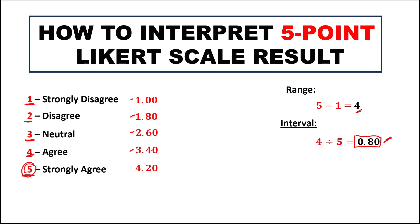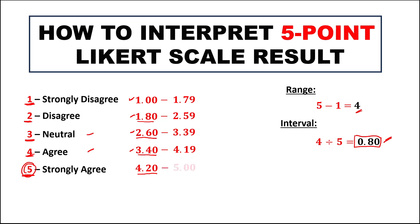To find the upper limits: since the next class starts at 1.80, the upper limit for Strongly Disagree is 1.79. For Disagree, since the next class starts at 2.60, the upper limit is 2.59. For Neutral, since the next starts at 3.40, the upper limit is 3.39. For Agree, since the next starts at 4.20, the upper limit is 4.19. And for Strongly Agree, the upper limit is 5.00.